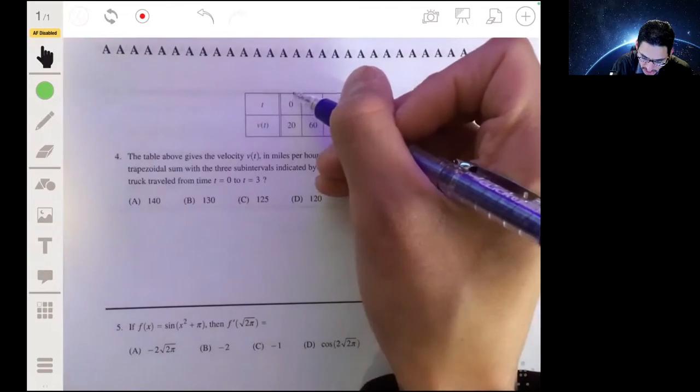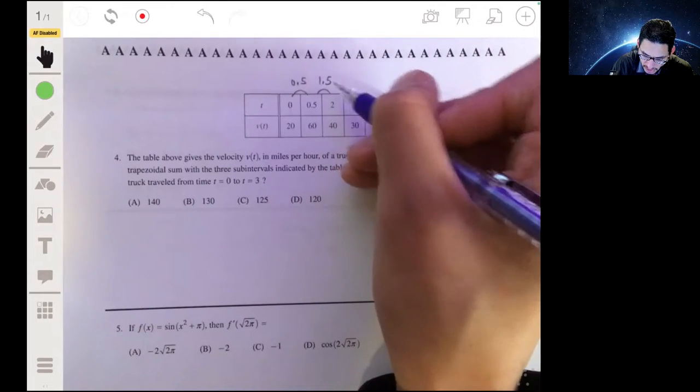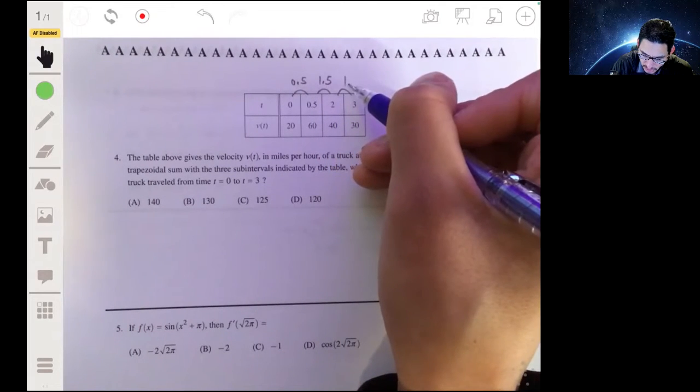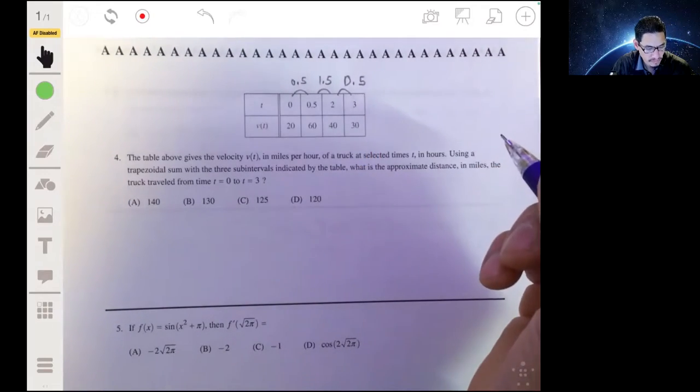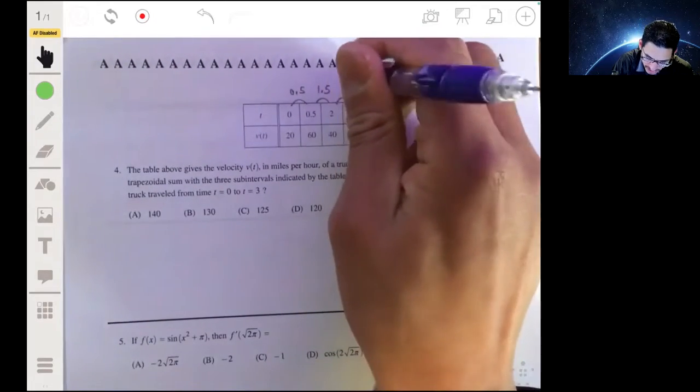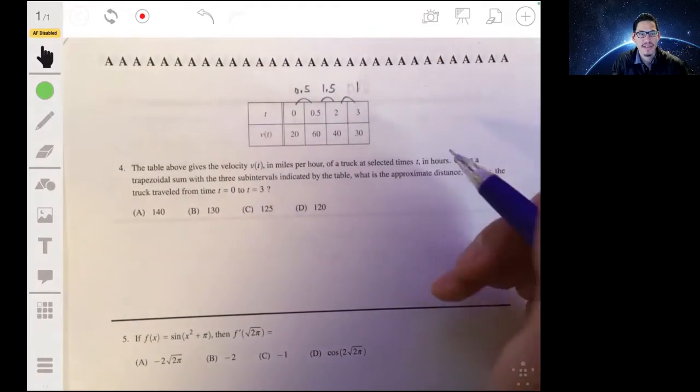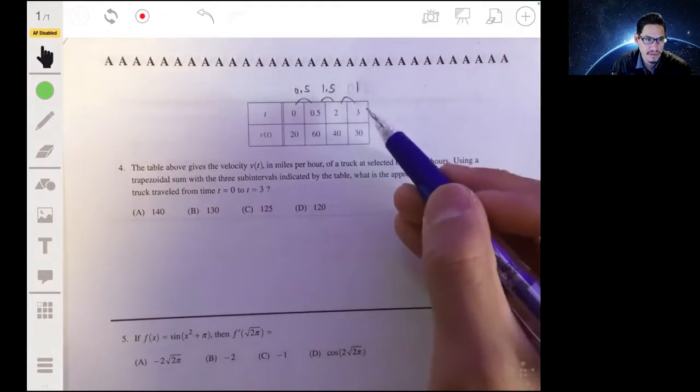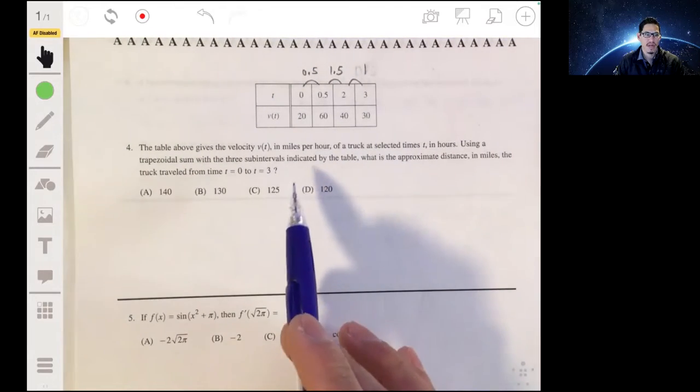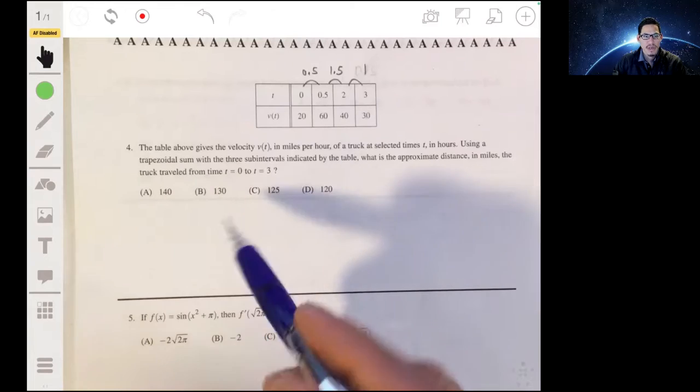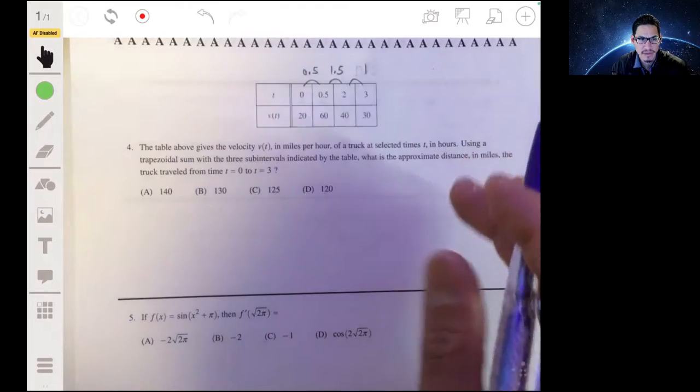So the subintervals, we're talking about t, so here the first interval is 0.5, the second is 1.5, and the next one is going to be 1. If you want to find the approximate distance in miles that the truck traveled from t equals 0 to t equals 3, what you want to essentially do is look at this as the sum of the area of three trapezoids.